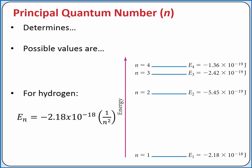Our principal quantum number, n, determines the size and energy of an orbital. The possible values are integers 1, 2, 3, 4, etc. As the value of n increases, the orbital has a higher energy and the electrons within the orbital are generally farther away from the nucleus.